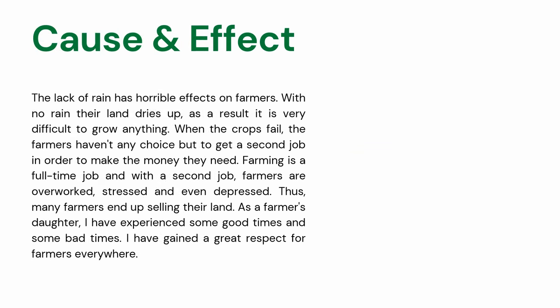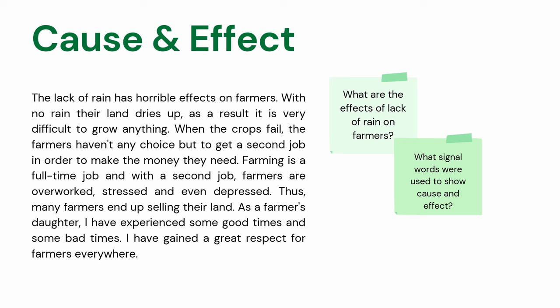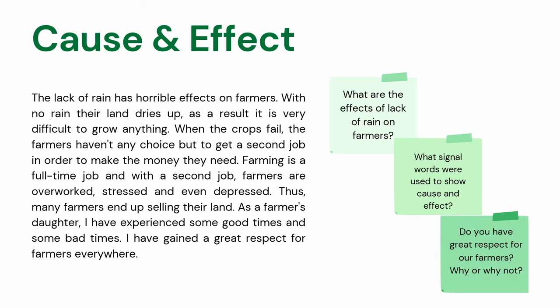Cause and Effect: The lack of rain has horrible effects on farmers. With no rain, their land dries up. As a result, it is very difficult to grow anything. When the crops fail, the farmers have no choice but to get a second job in order to make the money they need. Farming is a full-time job, and with a second job, farmers are overworked, stressed, and even depressed. Thus, many farmers end up selling their land. As a farmer's daughter, I have experienced some good times and some bad times. I have gained a great respect for farmers everywhere. Questions: What are the effects of lack of rain on farmers? What signal words were used to show cause and effect? Do you have great respect for our farmers? Why or why not?